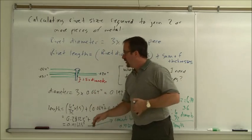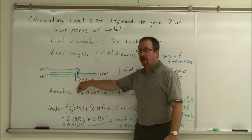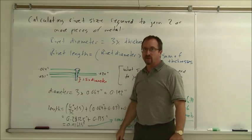Now, I want to find out the length. Well, the length is 1.5 times the diameter, so 1.5 times the diameter, plus the thickness of each piece so I can get the rivet long enough to go through them all.